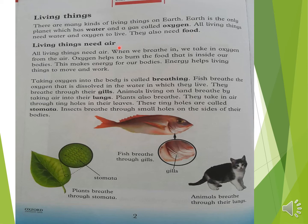Living things also need food. All living things need air. When we breathe in, we take in oxygen from the air. Oxygen helps to burn the food inside our bodies. Oxygen is used inside our bodies — this makes energy for our bodies. Aquatic animals use oxygen that is dissolved in the water in which they live.